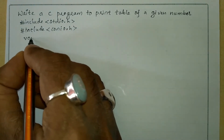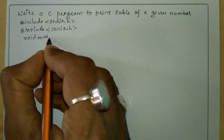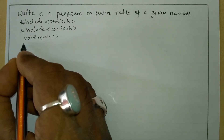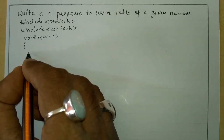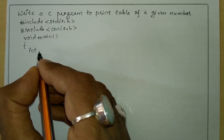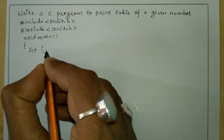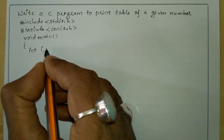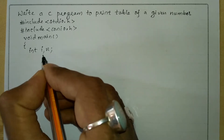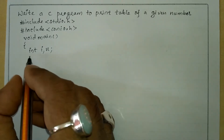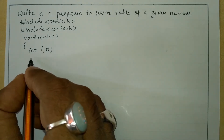Now I'm going to write the void main function with a curly open brace. Here I'm going to declare two variables of type integer: I'll take one variable i for the looping structure and n for the number entered by the user.